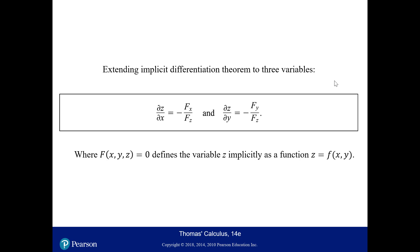We can extend the implicit differentiation theorem to three variables. If we have a third variable z, the partial derivative of z with respect to x equals negative the partial derivative of f with respect to x divided by the partial derivative of f with respect to z. Similarly for the partial derivative of z with respect to y. This applies when the function is set equal to zero but defines z implicitly as a function of x and y. That's it for this video.